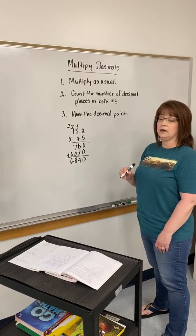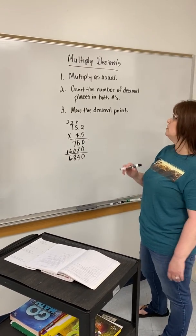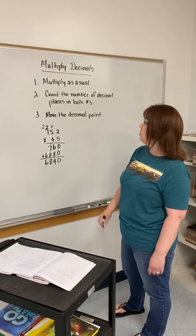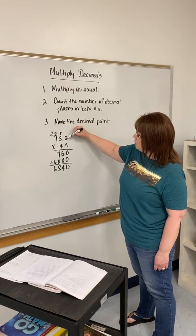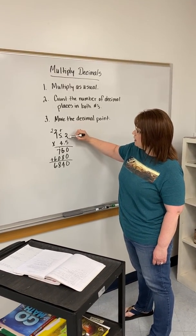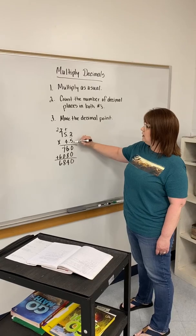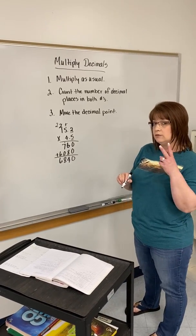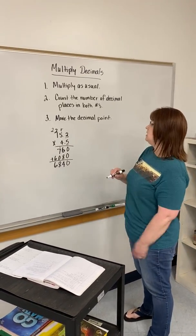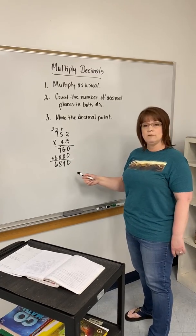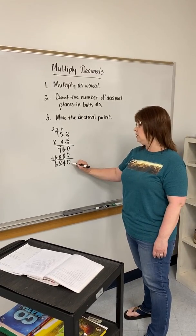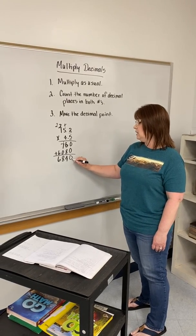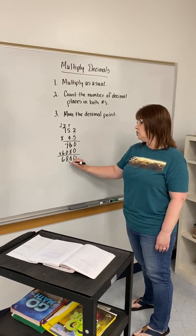But don't forget you have to take your decimal points into account. So you count the number of decimal places in both of your numbers. In the top number we had one decimal place, and in this number we also had one decimal place, so that's a total of two decimal places. So we move the decimal point from the end of our answer that same number of places — we start at the end and move over two places.